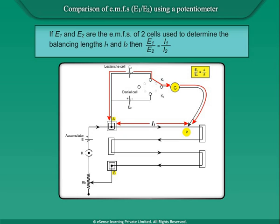If E1 and E2 are the EMFs of two cells used to determine the balancing lengths L1 and L2, then E1/E2 = L1/L2.